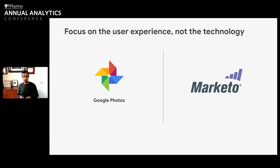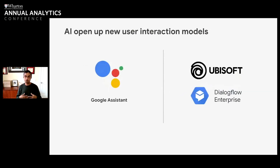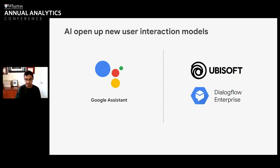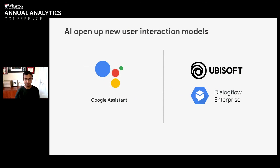The next thing is that AI opens up new interactions. With Google Assistant, introducing conversational AI changed how people use Google Search and expanded its use in new ways, much more than we would have thought. We're finding that with our customers too — Ubisoft is using Dialogflow to better interact with game developers and gaming customers, and that has opened up a new interaction model that has really improved customer satisfaction.